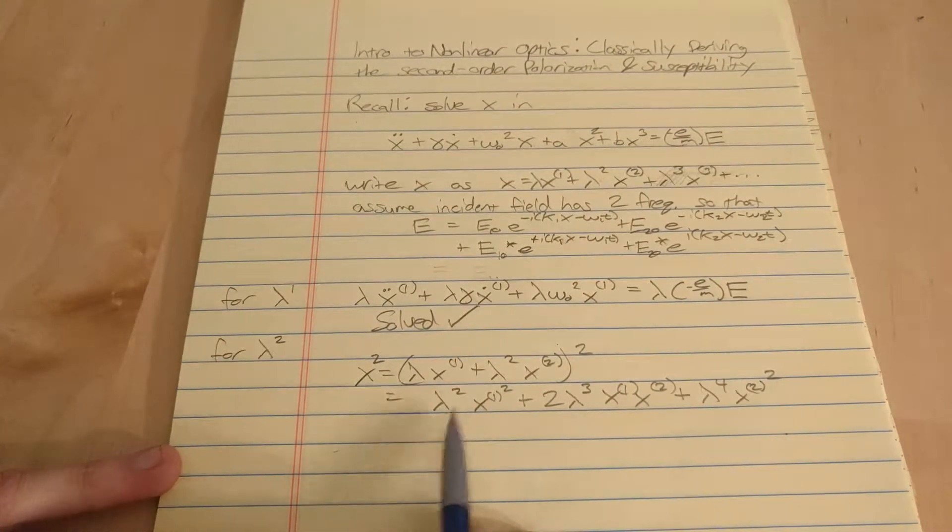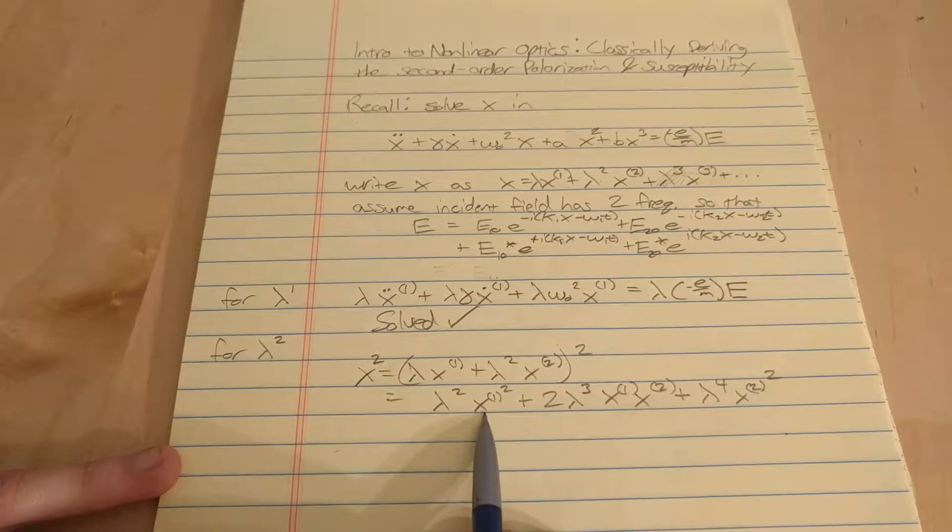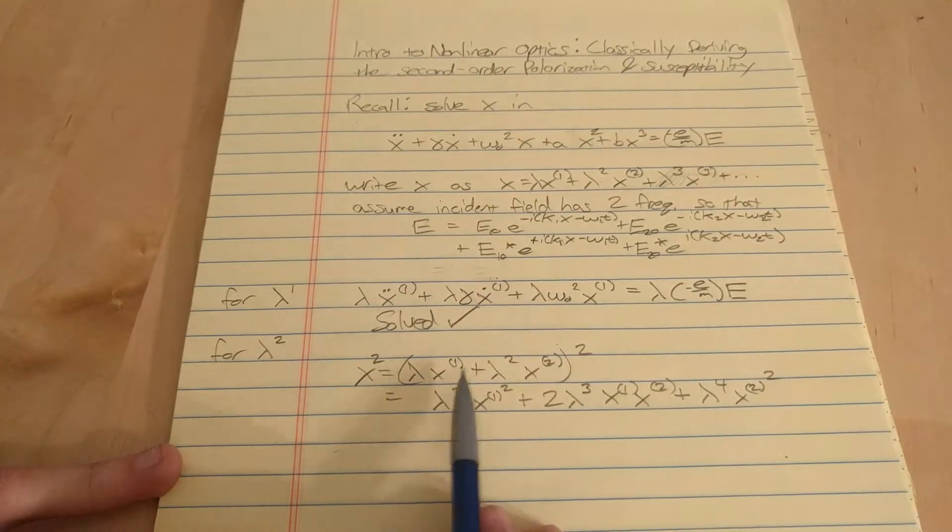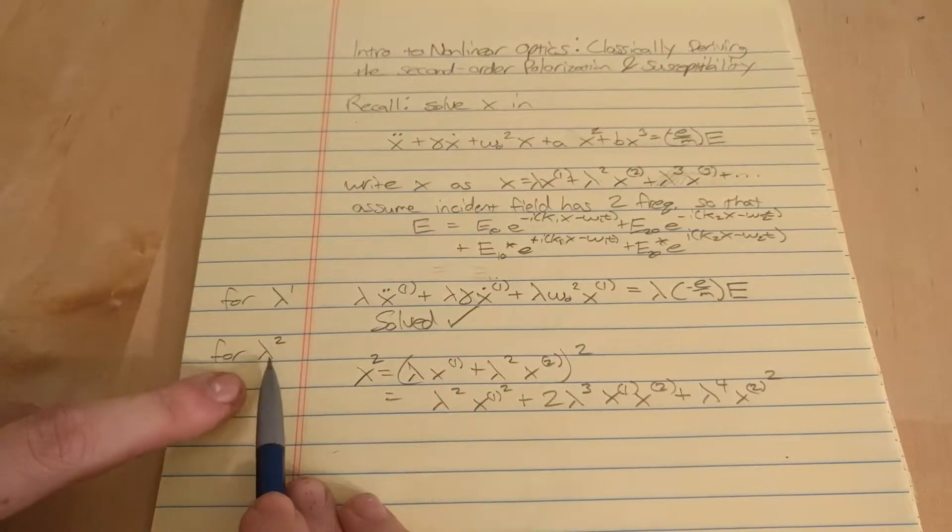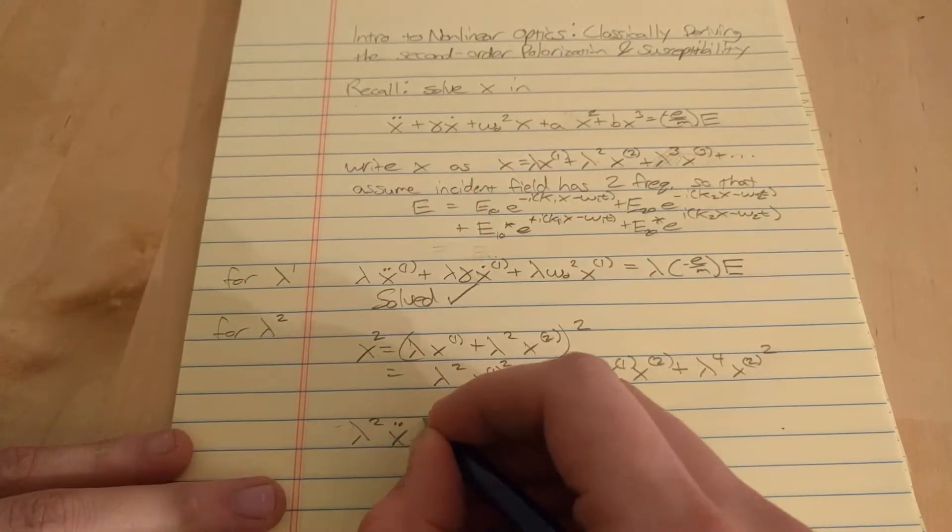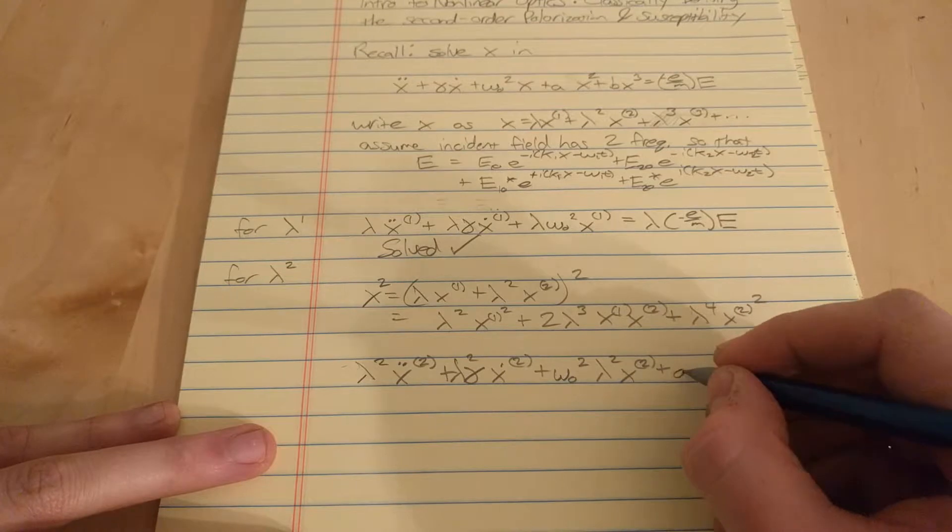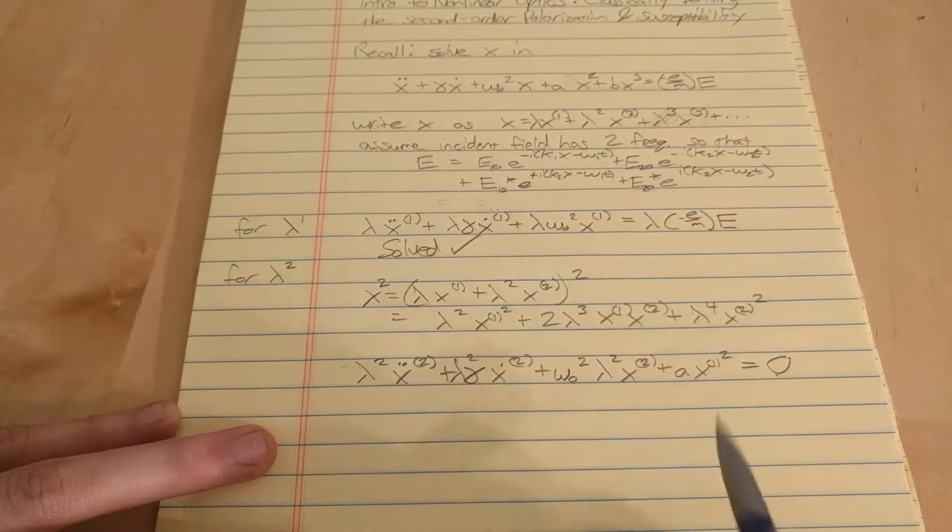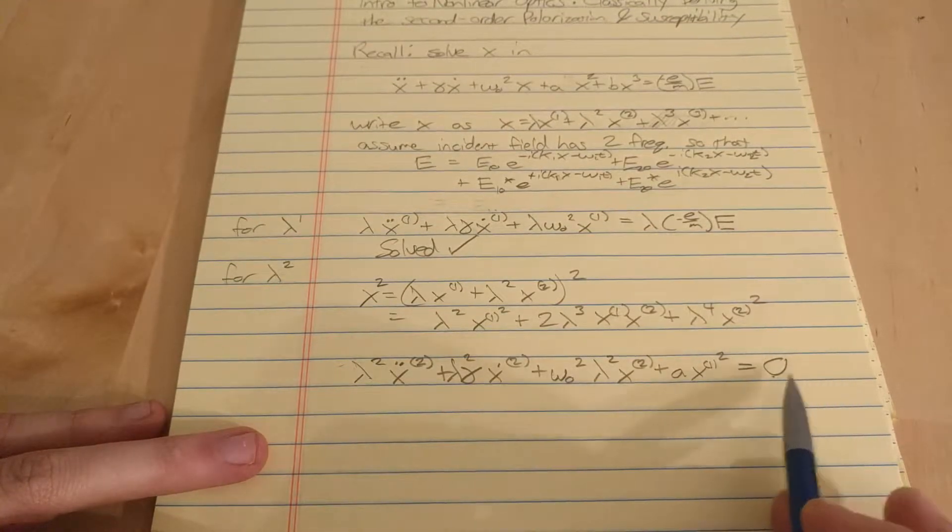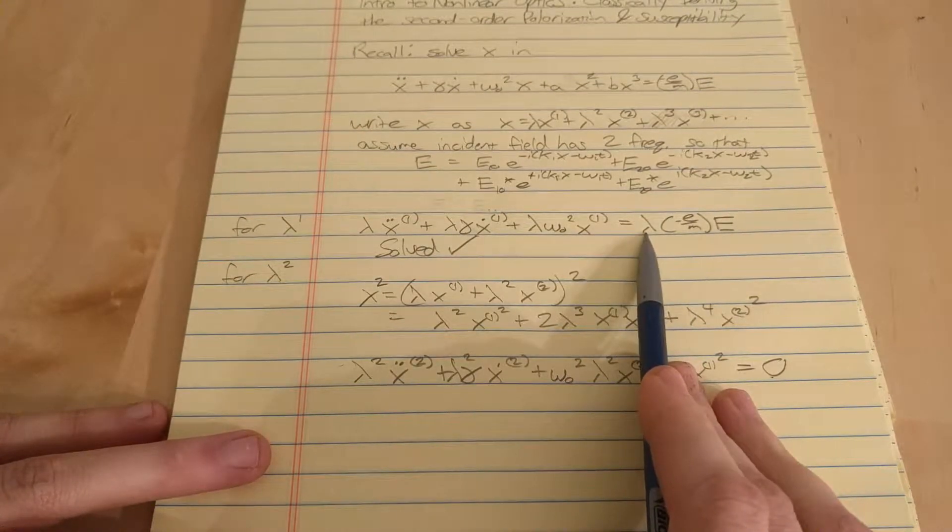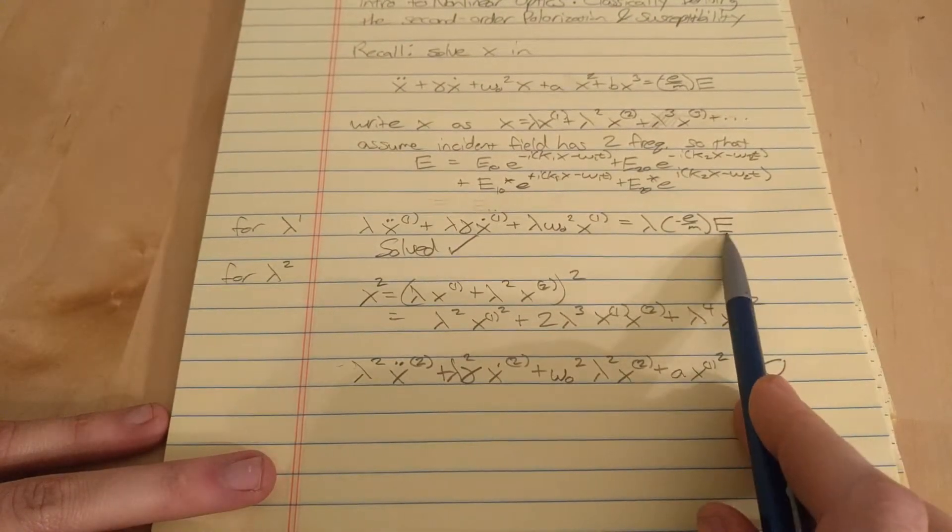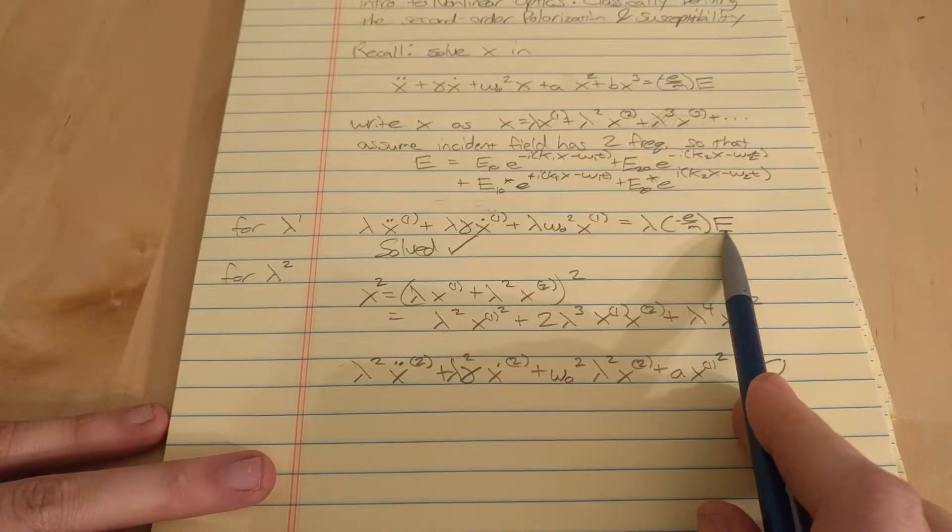The only term with lambda squared in it is X1 squared and also X2. If we plug our X into this equation and collect all the terms with lambda squared, we're going to get this equation. The right side has disappeared because we only multiply the left by lambda and not higher order lambdas. With that assumption, we're assuming we don't have a gigantically huge electric field.